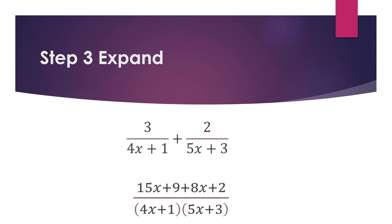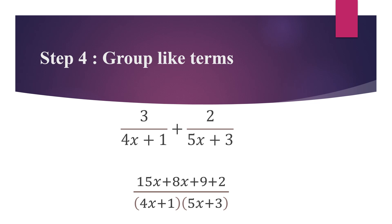Moving on, our next step is to place the results of the expansion. The results are 15x + 9 on one side and 8x + 2 on the other side. We then group the like terms, giving us 15x + 8x + 9 + 2 as the numerator, which results in 23x + 11.